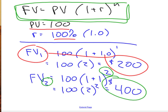In two years, at 100% interest, compounded, your $100 that you have in the present is worth $400.